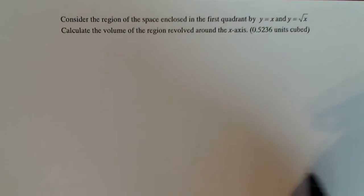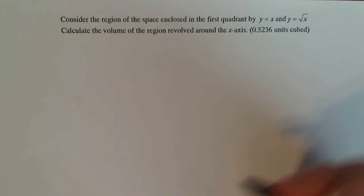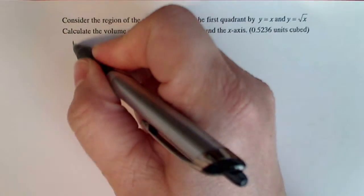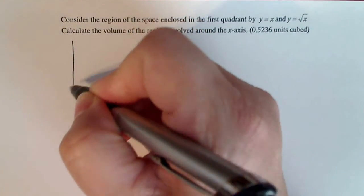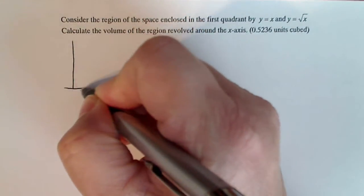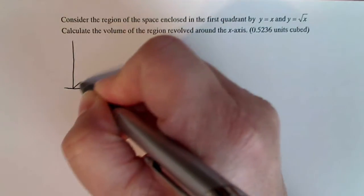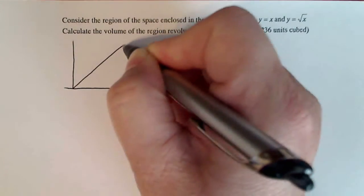The first thing that you do when you solve a problem like this is graph the region over which you're working. Draw an accurate graph. So my graph of y equals x bisects the first quadrant.